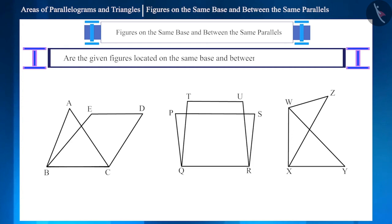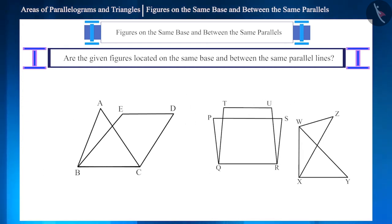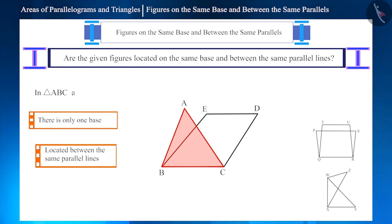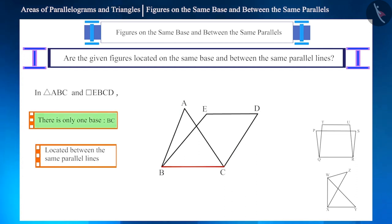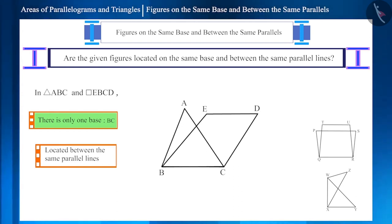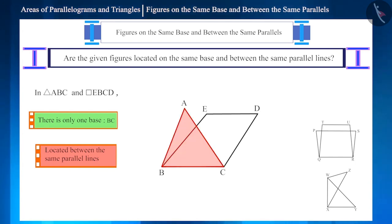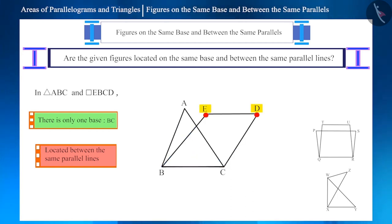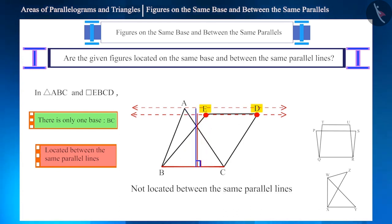With this understanding, let's move ahead and verify whether the figures on the screen are located on the same base and between the same parallel lines. In the first figure, triangle ABC and parallelogram ABCD have side BC as the common side — both figures have the same base BC. But these figures are not located between the same parallel lines, because in triangle ABC the opposite vertex A of base BC, and in parallelogram ABCD the opposite vertices E and D of base BC, are not placed on the same line.